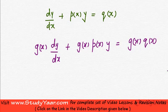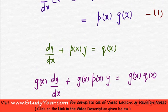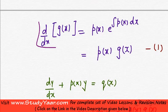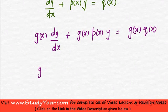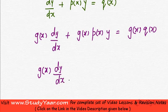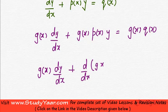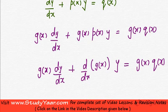I would have g(x) dy by dx plus g(x) p(x) into y is equal to g(x) q(x). Just realize, g(x) into p(x) is dy by dx of g(x). So let us substitute this, what I get is, g(x) dy by dx plus dy by dx of g(x) into y is equal to g(x) into q(x).